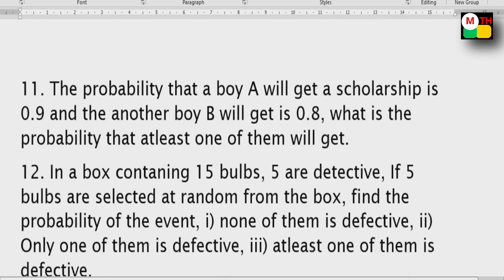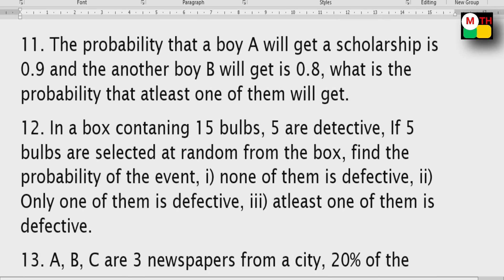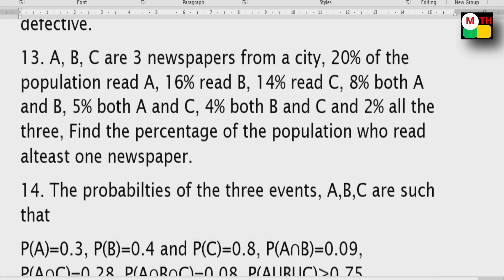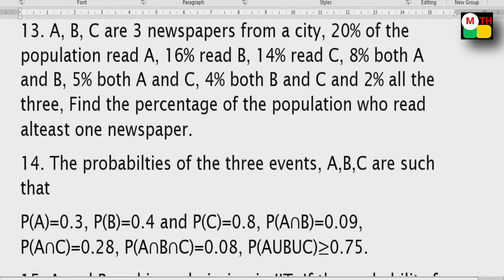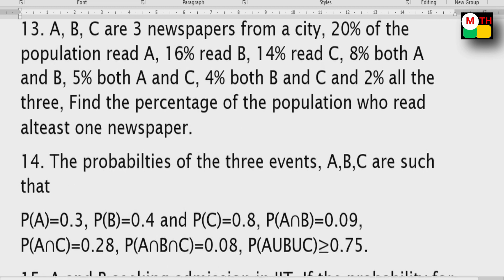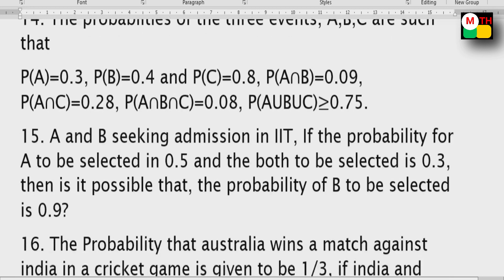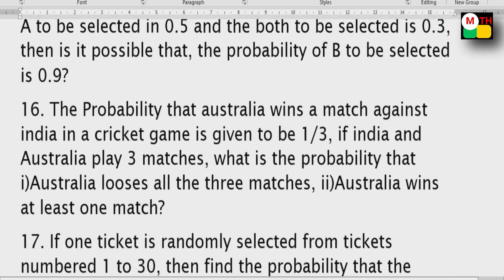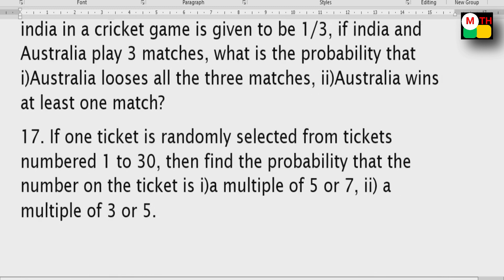This is a problem. Scholarship sums — there are a few names: bulb, defective bulbs, newspaper. I want to keep keywords from the first time. The newspaper sums, direct questions and probability questions, and conditional probability are important. Seeking admission in IIT is important. Probability that Australia wins a match is important.